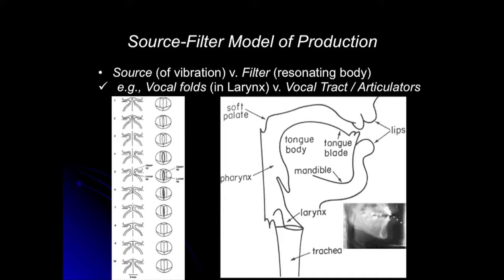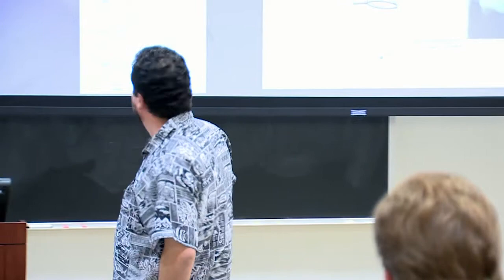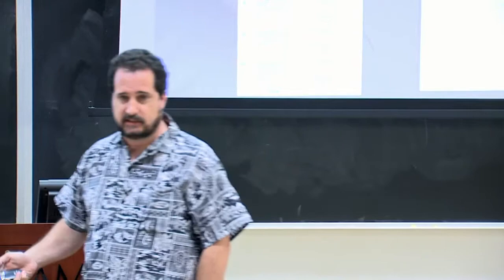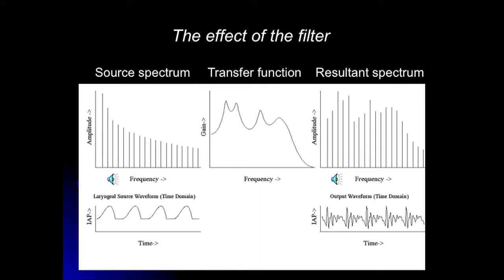The filter — the second stage where we're modifying the shape and size of what we're passing air through — is what ultimately determines what we hear as speech. But the same sort of characteristics are going to guide some of our interest in musical sounds and environmental sounds as well. So we're interested in not just the filter, but the interaction between these two things and what that might do to our ability to recognize the sound.